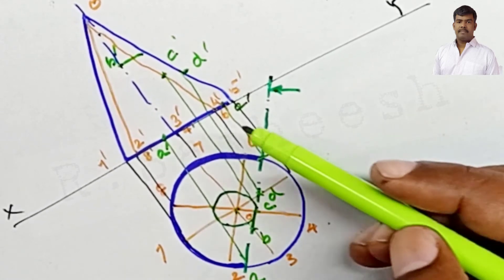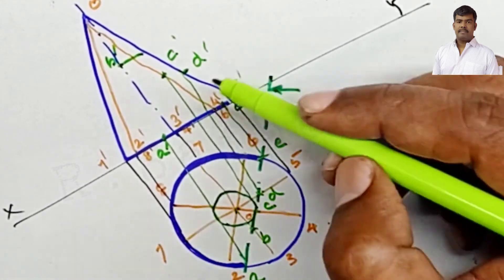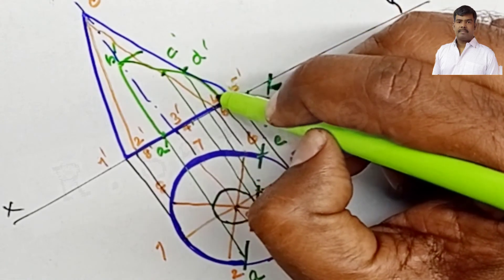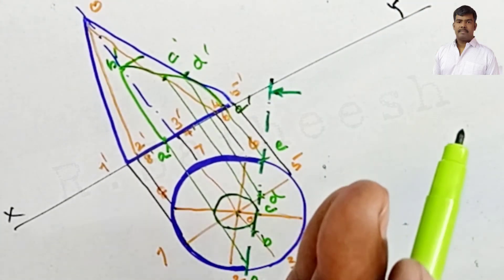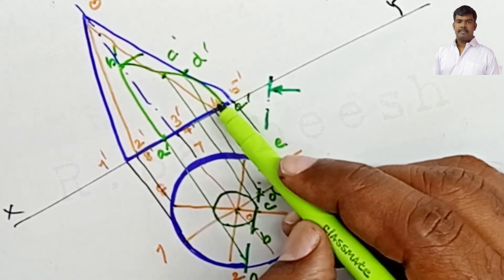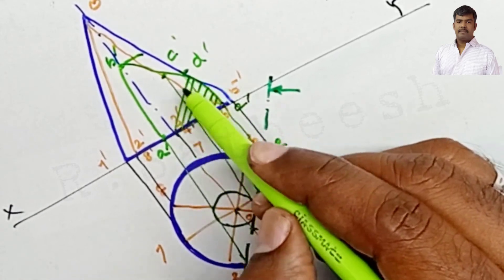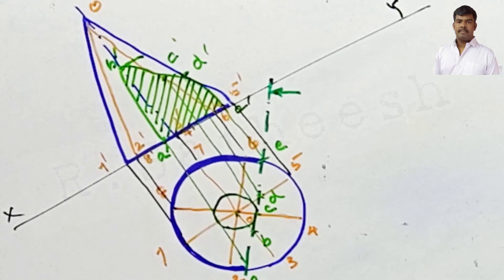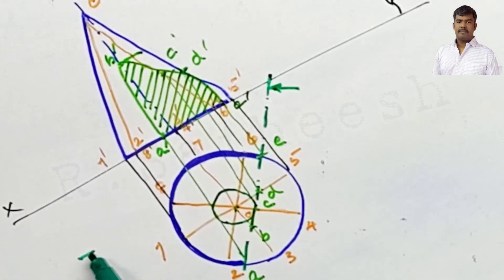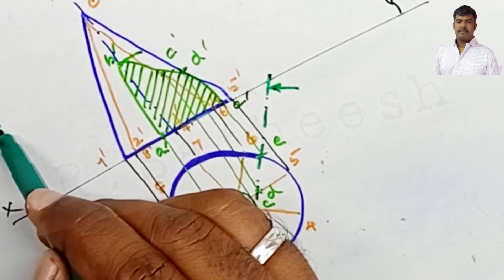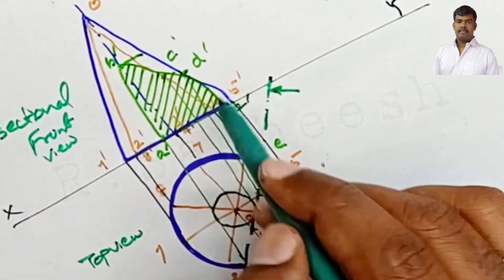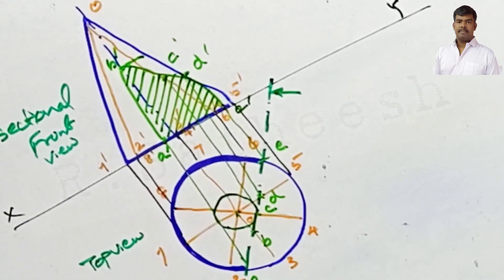Since the cross section is circular, join points A to B, B to C, C to D, D to E by freehand curve in the front view. The cut and removed portion is indicated, and the section area A-B-C-D-E is filled with hatching lines. This completes the top view and the sectional front view, where only the hatched sectioned surfaces are shown.